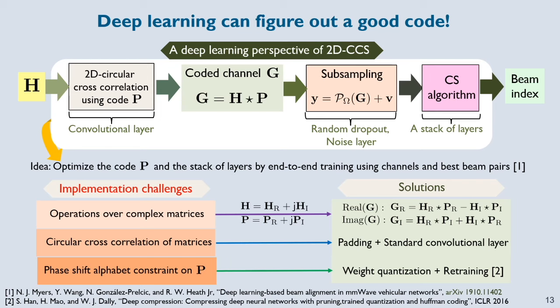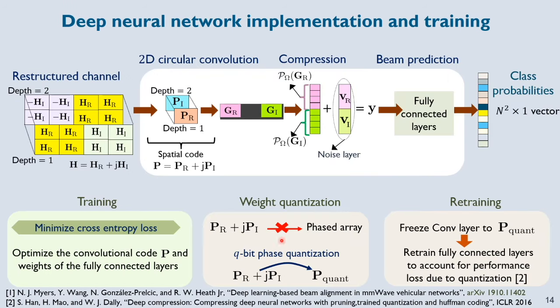To solve this problem, we use the idea of weight quantization followed by retraining. The diagram here shows a step into the deep neural network which emulates 2D CCS. The best beam index is encoded as a one-hot vector and by minimizing the cross entropy loss, the weights of the network are optimized. After optimization, the code P may not be compatible with a Q-bit phased array where Q is the resolution of the phase shifters. To solve the problem, we first perform Q-bit phase quantization of the complex weights. As quantizing the weights can deteriorate the performance of the network, the subsequent fully connected layers inside the green box are retrained.